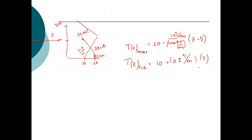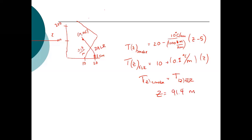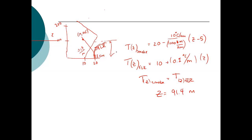We solve these two simultaneous equations, looking for the point where T(z) of the smoke equals T(z) of the environmental lapse rate. Solving for Z gives 91.4 meters. So the smoke will disperse up to about 91 meters, staying close to ground level within that stable region.